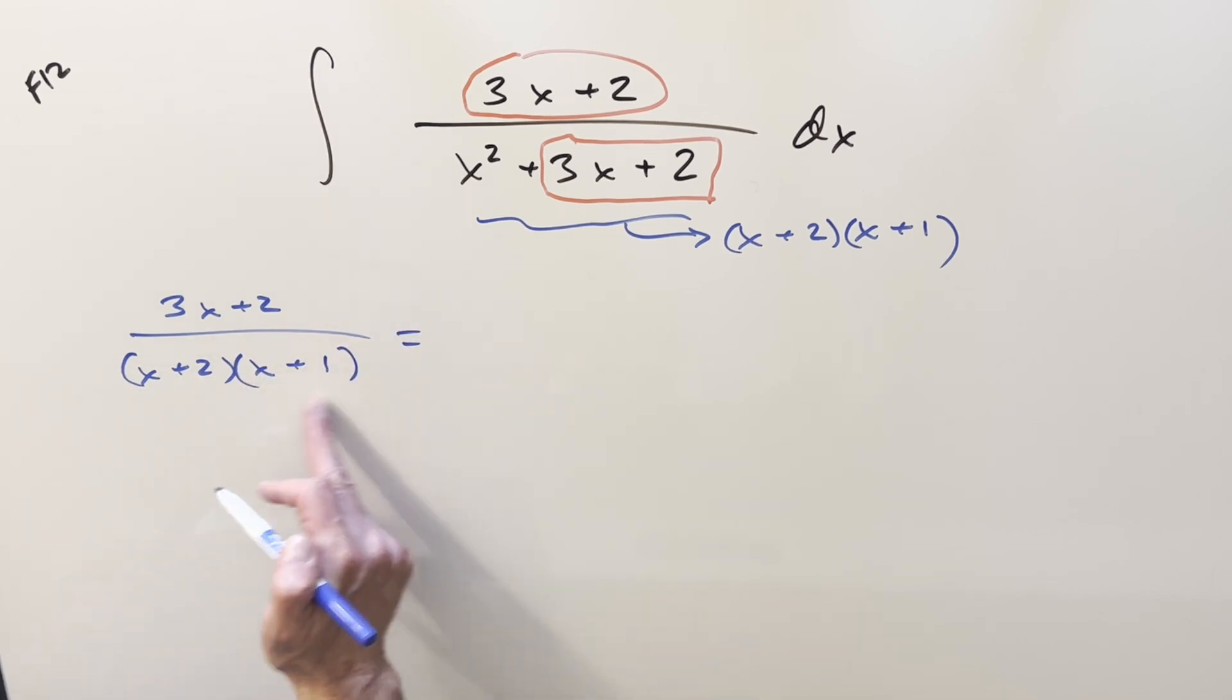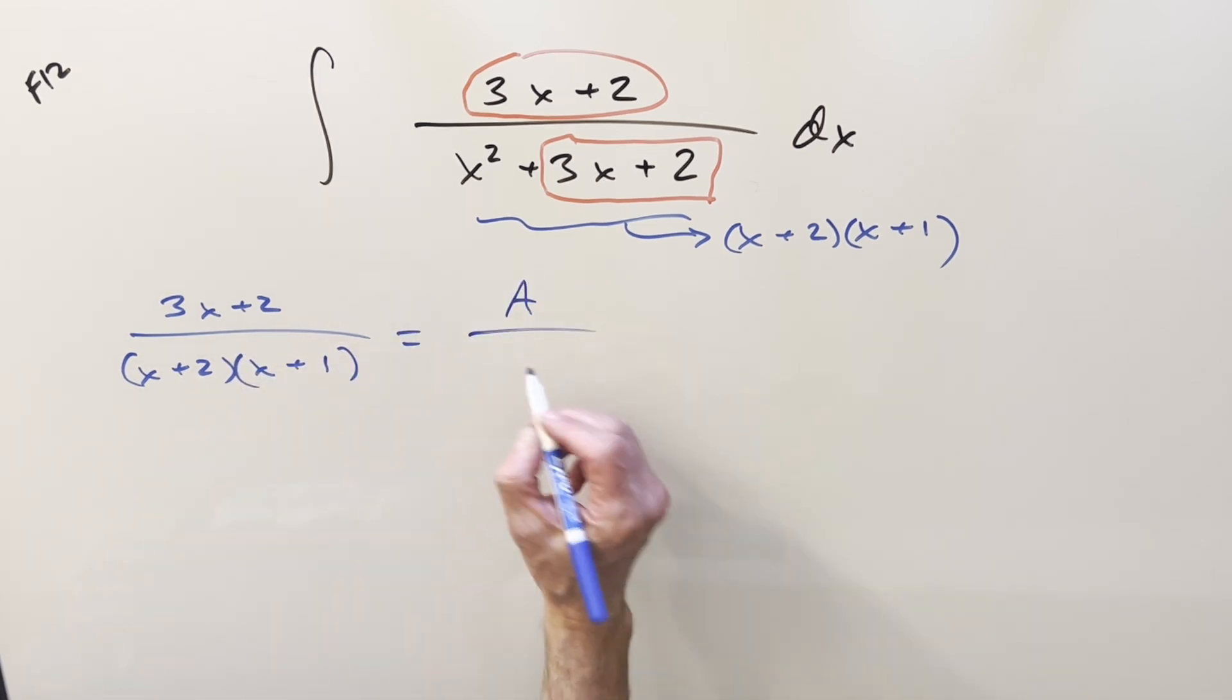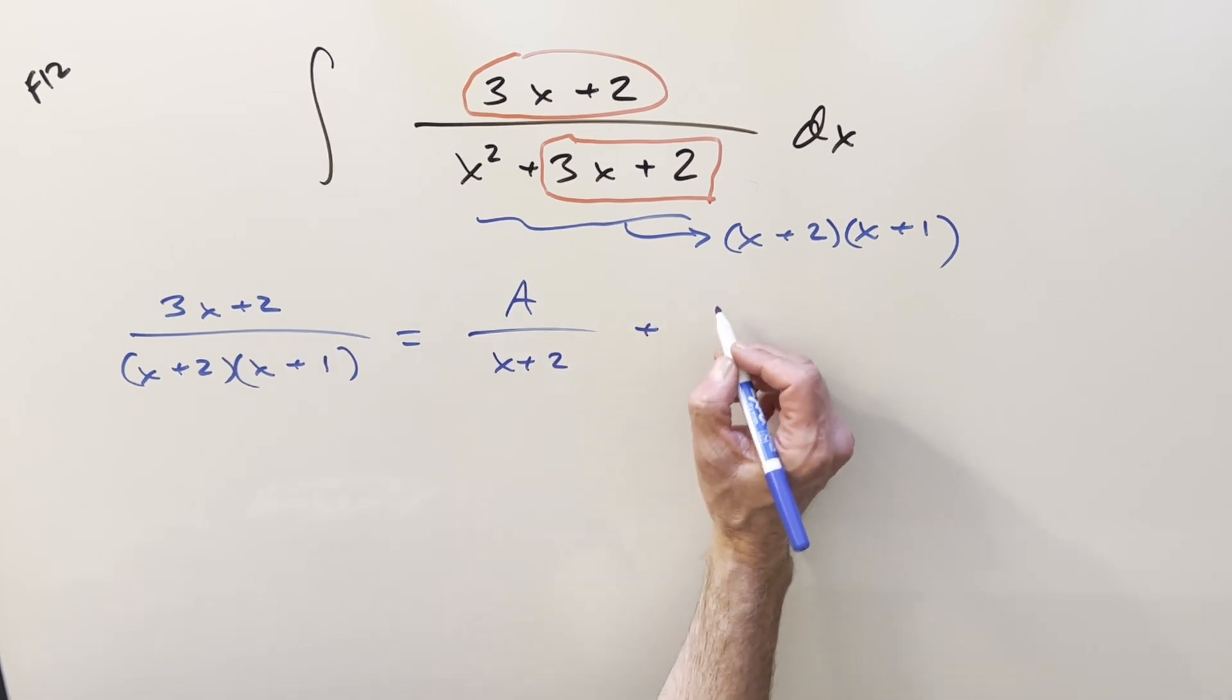We'll just set this up, breaking up this denominator as A over x plus 2, addition, add B over x plus 1.